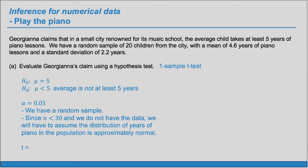Now we're ready to find our t-statistic. T is always the observed or the estimate minus the null, over the standard error. In this case, that's the observed value of 4.6 years minus the null of five, divided by the standard error s over square root of n — so 2.2 divided by the square root of 20. We'll need the degrees of freedom, which is n minus 1 for a one sample t-test, so that's 19 degrees of freedom.